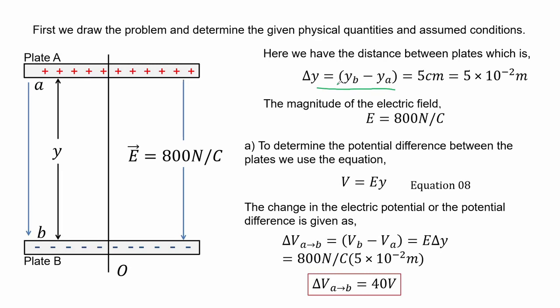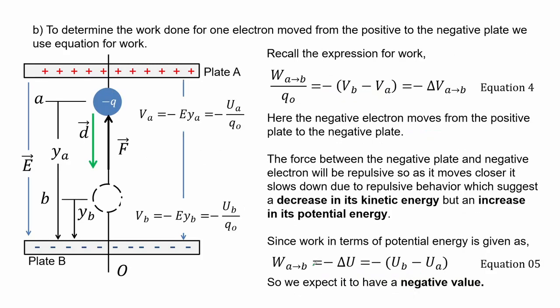To determine the potential difference between the plates we use equation 8. Substituting the known values, we get that the change in electric potential — the potential difference — is 40 volts.